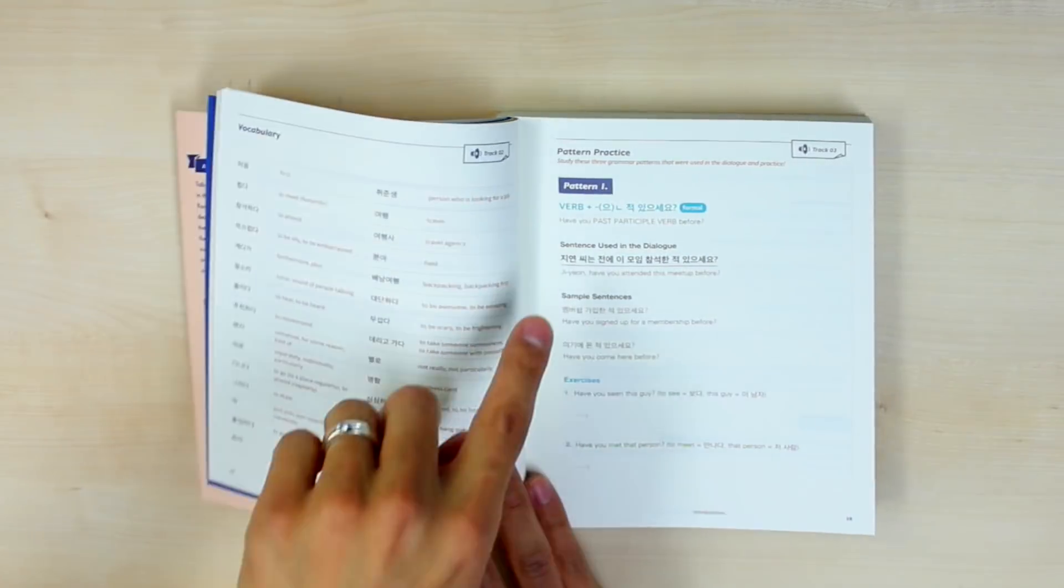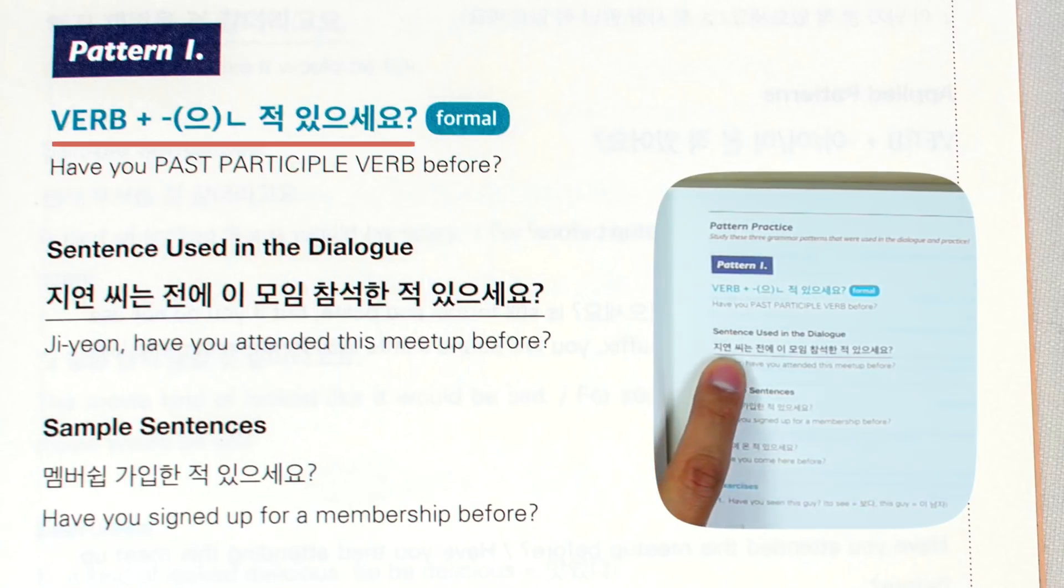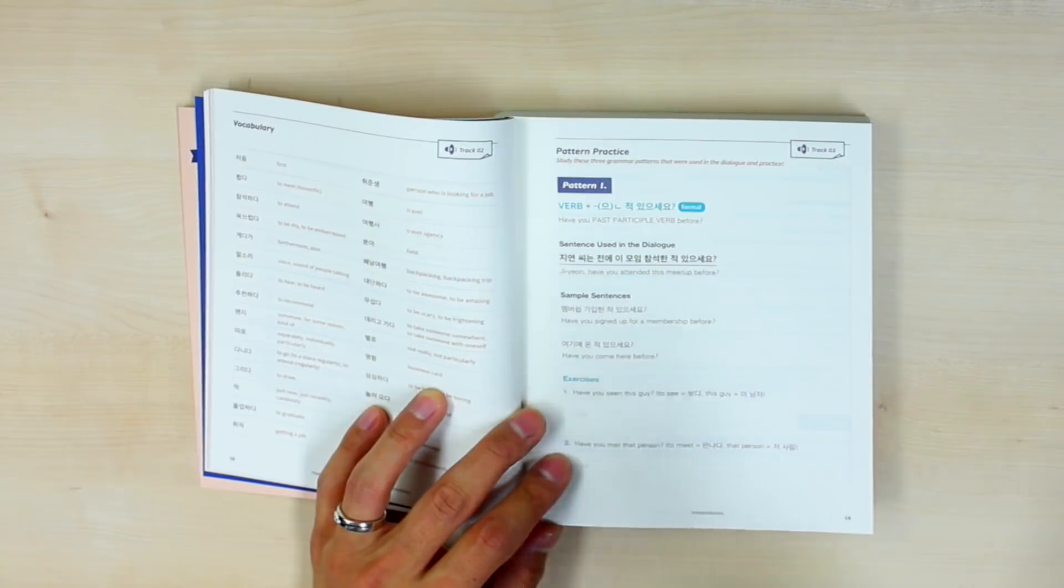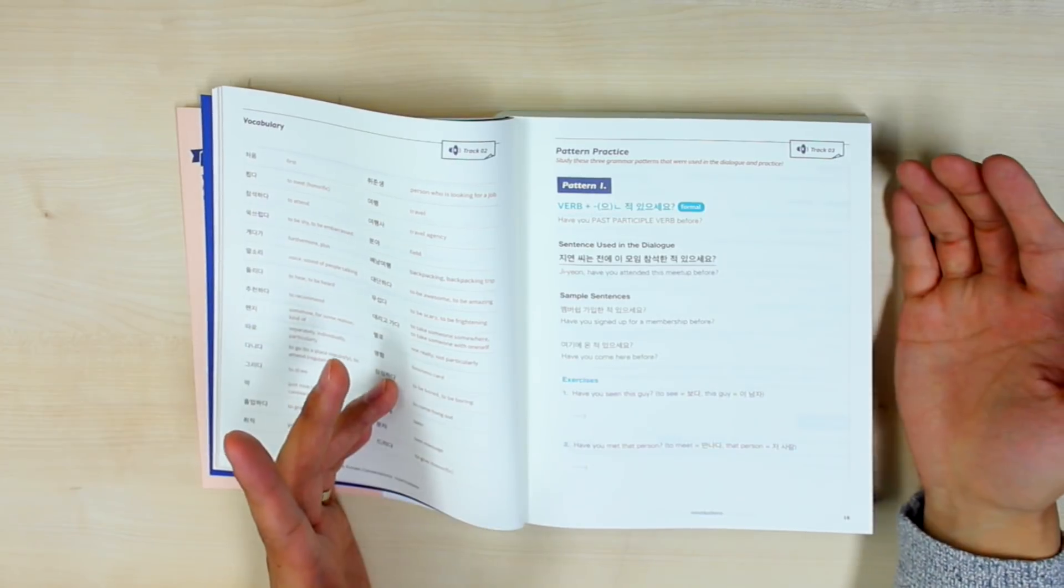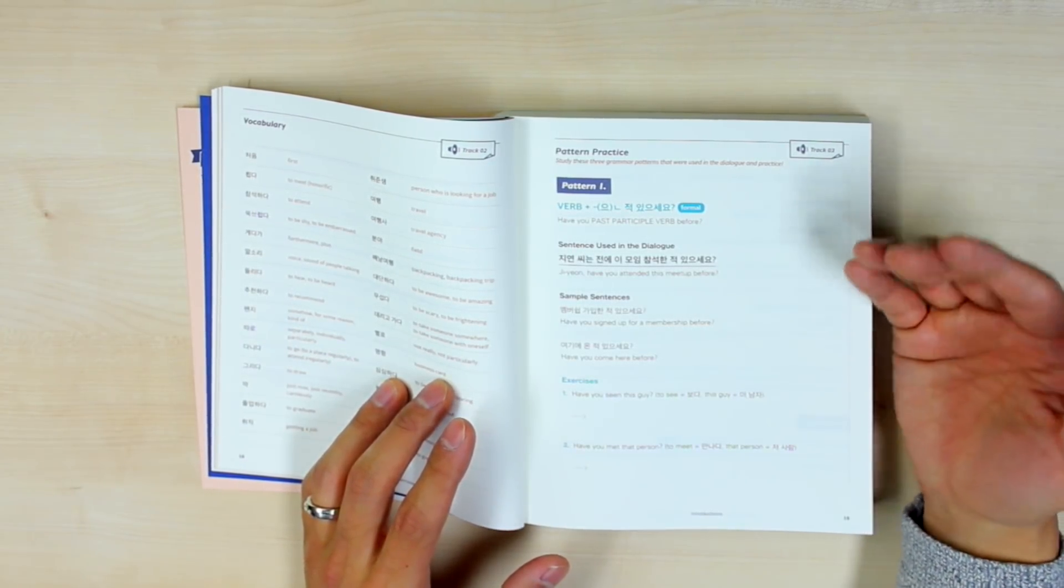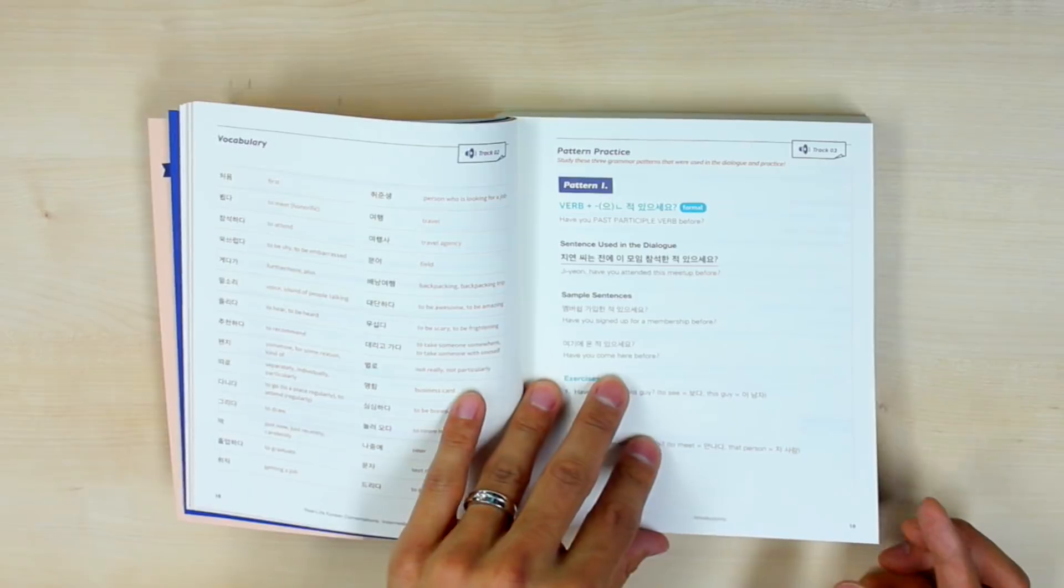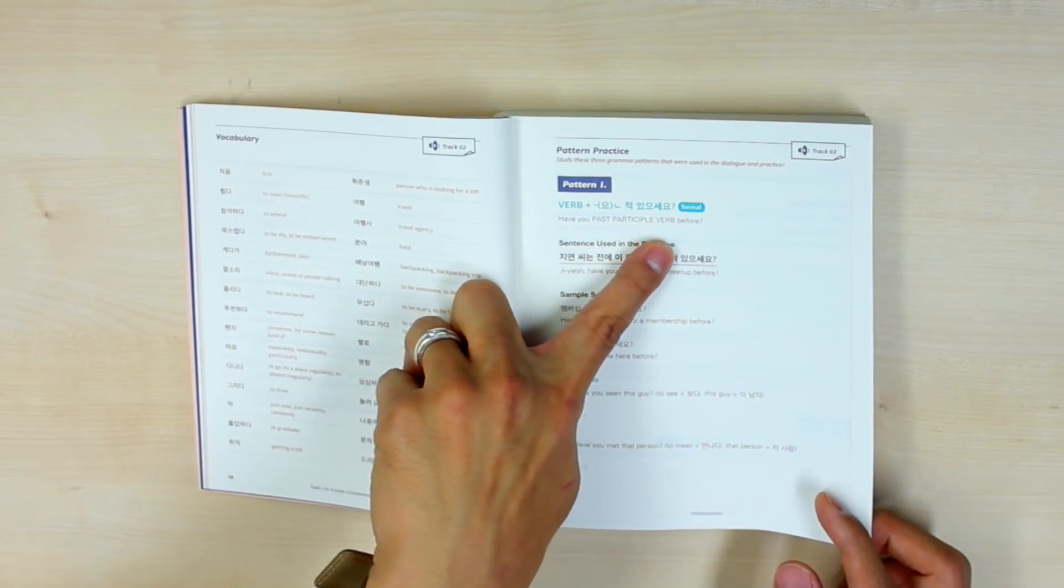For example, among the sentences that were used in this dialogue is verb plus 은 적 있으세요. Have you ever done something before? So sample sentence used in the dialogue was 지연 씨는 전에 이 모임 참석한 적 있으세요? 지연 Have you attended this meetup before? And then of course, memorizing this line is good. Very good. Can you see my thumbs up? Yeah, very good. But then if you just memorize this line, how can you use it? How can you apply it to whatever you want to say in the future in the specific situation? So we have other sample sentences like have you come here before? Have you been here before? And we have exercises.